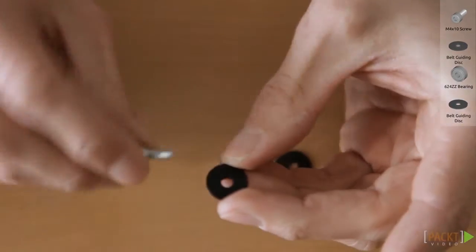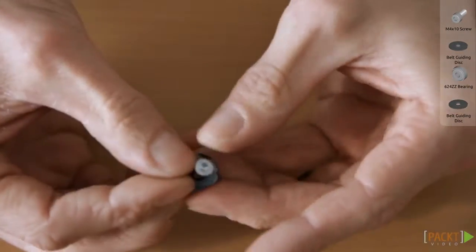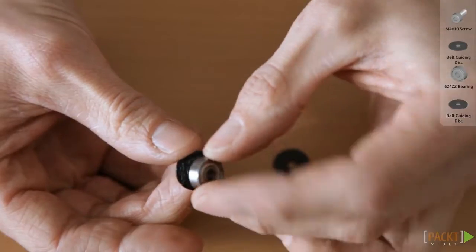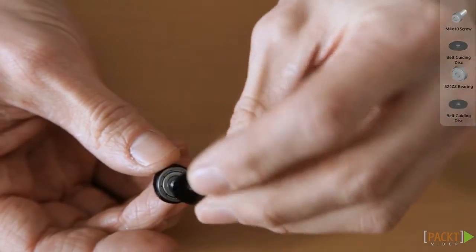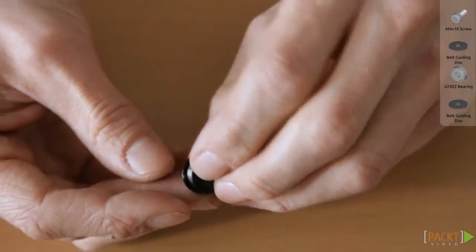Prepare the idler by putting two belt guiding discs and a ball bearing onto an M4x10 screw. Make sure to keep the shiny side of the belt guiding discs on the outside.